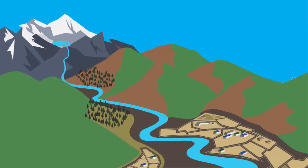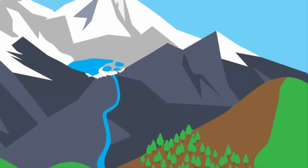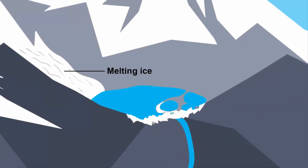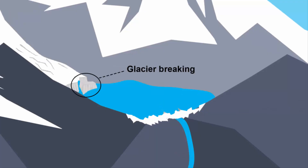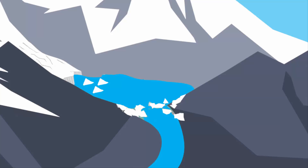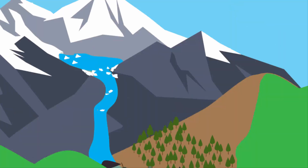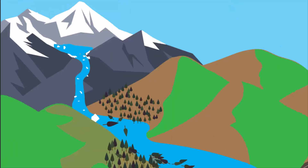When glaciers melt and form a glacial lake, the water from the lake slowly drains out in the form of a river. Now imagine — even if a few massive chunks of glaciers break and fall into the lake, that will not only increase the volume of water in the lake, it will also increase pressure. As a result, water gushes out and causes a flash flood in the river.